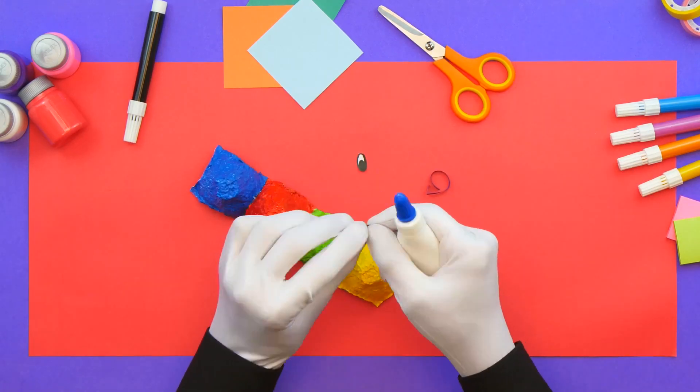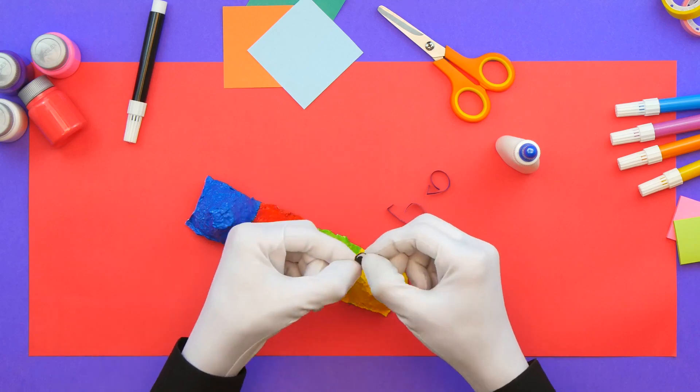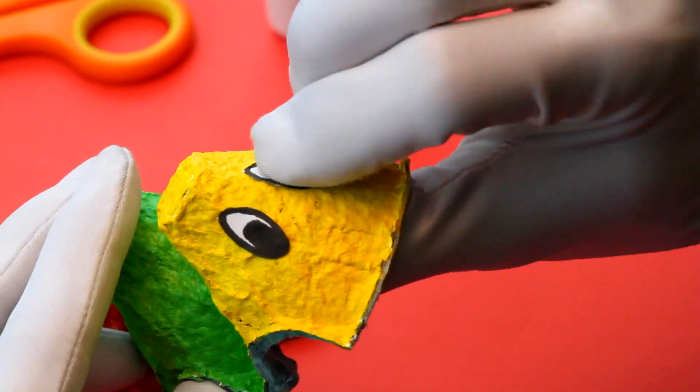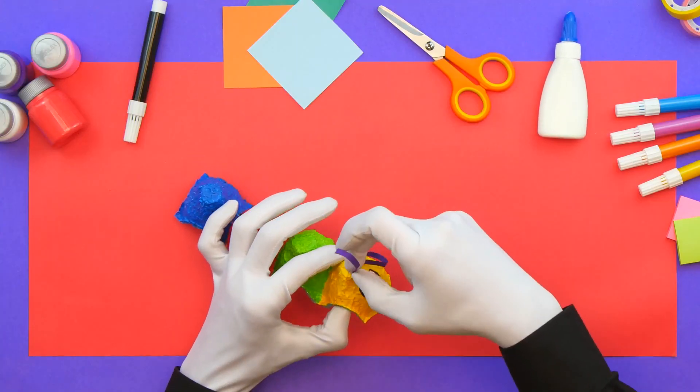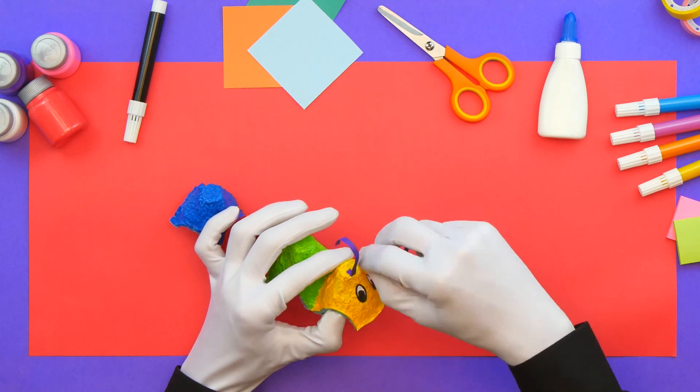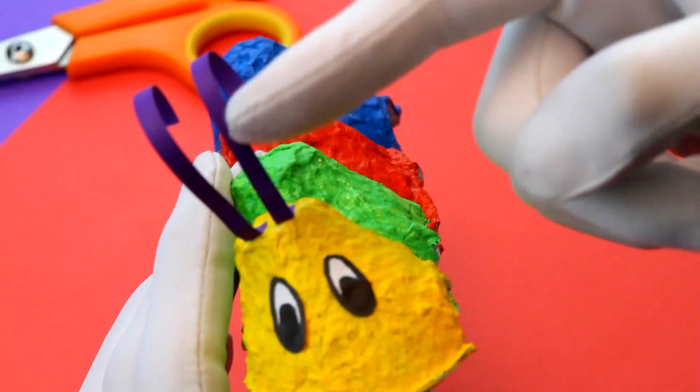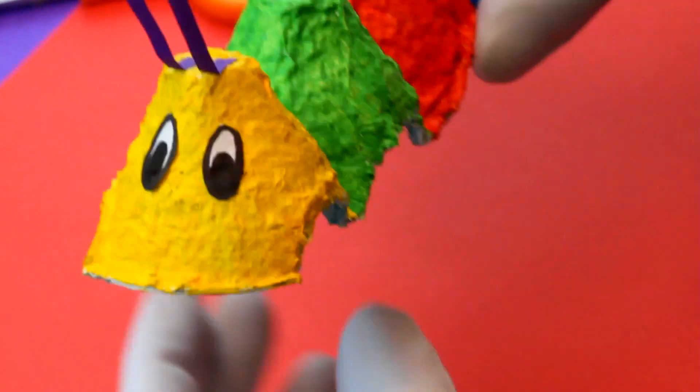It's almost done. Now, glue the eyes and the antennas on the body of the centipede. Look at that. Amazing! Super Hands, you've done it again.